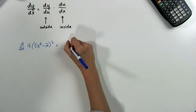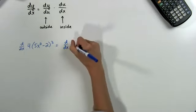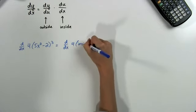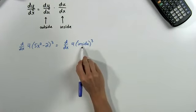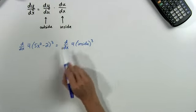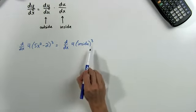We said that the outside function is 4 times the inside cubed, so we're going to take the derivative of that first, 4 times the inside function cubed. And we're not going to worry about what the inside function actually is, because for this derivative we're only concerned with the outside function.